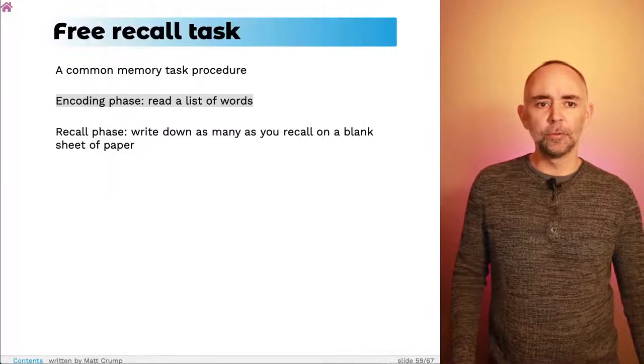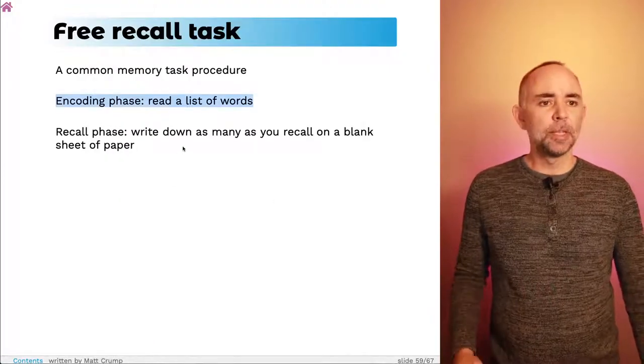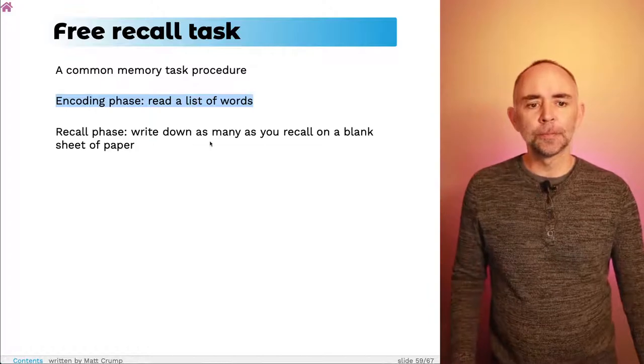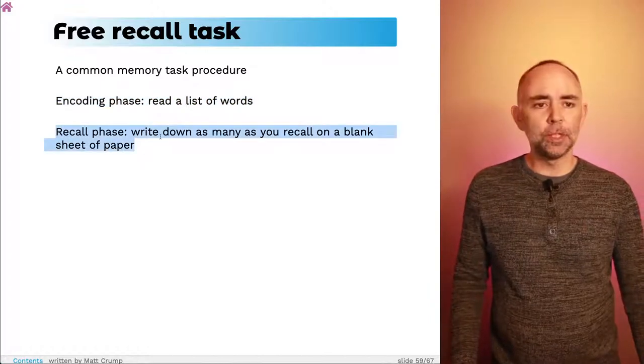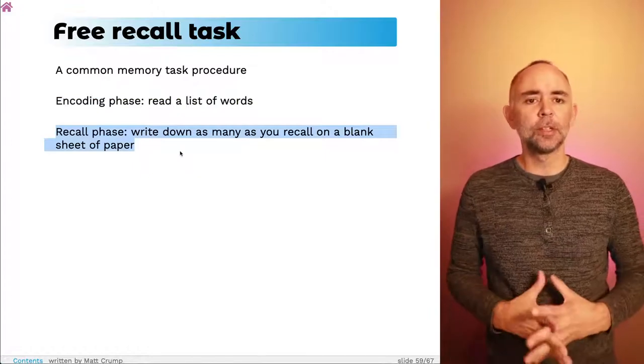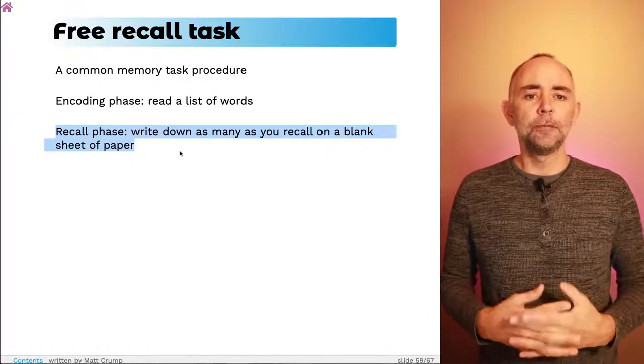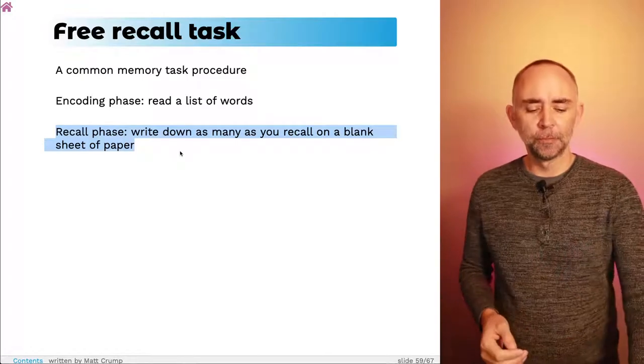After removing the list, let's say you spent a minute reading all those words. You then go to a recall phase, where you're instructed to write down as many of the words as you can remember on a blank sheet of paper. The researcher can then look at what you wrote down, figure out which words were actually on the list, which words you didn't report, and any words you wrote down that weren't actually on the list.